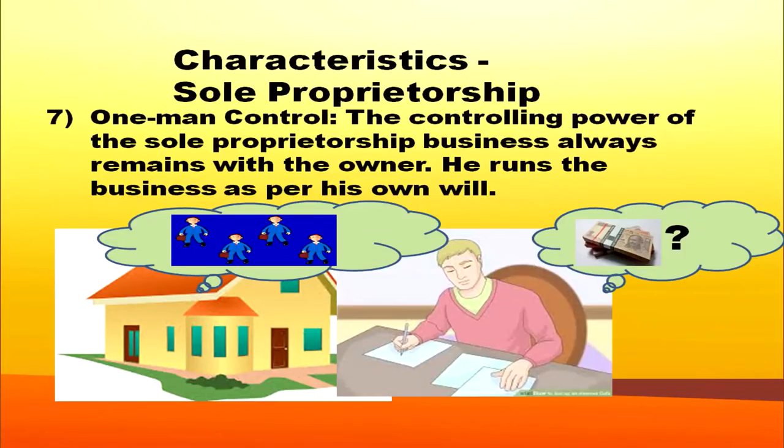Another characteristic is one man control. The controlling power of the sole proprietorship business always remains with the owner. He runs the business as per his own will. He has to make arrangement for the building, manage the workers, and make arrangement for money. Everything is controlled by this person — the owner, that is the sole proprietor.